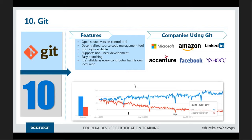Git is a part of decentralized, or distributed, source code management — a distributed version control system. In a centralized VCS, all workstations connect directly to the remote repository and commit changes directly to a central server. In a distributed VCS like Git, workstations first commit code to a local repository and then push it to the central repository. It is highly scalable, meaning we can add more servers and workstations depending on the requirement.